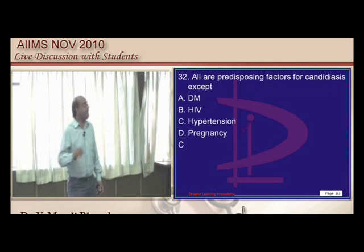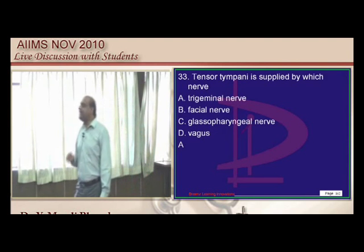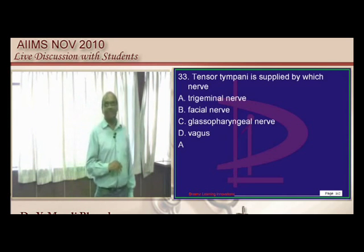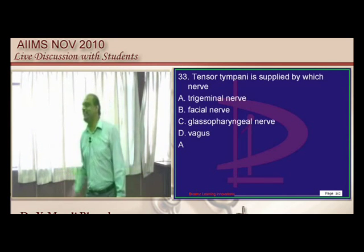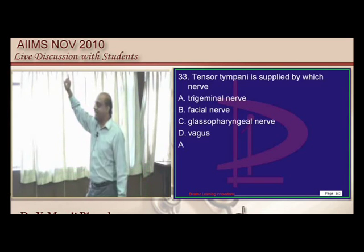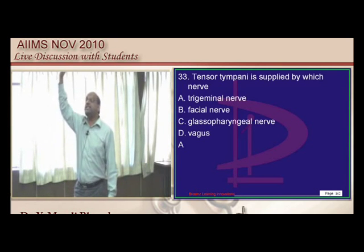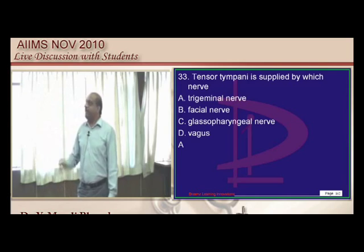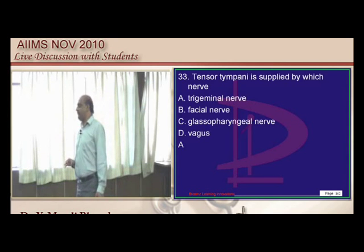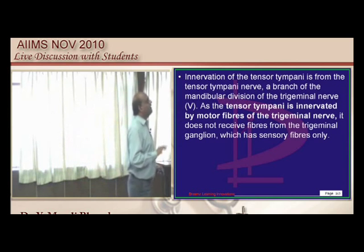Hypertension is not a risk factor, but diabetes, HIV, and pregnancy are risk factors. What supplies the tensor tympani? Don't answer facial nerve. Second branchial arch gives the second cranial nerve — S for second, S for seventh nerve, S for stapedius. Whereas tensor tympani is supplied by the mandibular division of the trigeminal nerve.